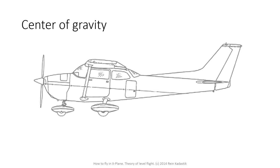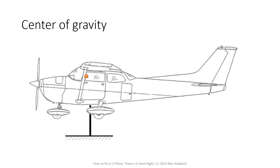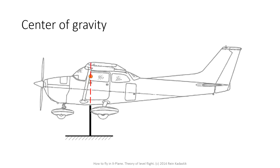Let's get started. The very first thing I'd like to talk about is the center of gravity. I will represent it as an orange dot on an aircraft. The center of gravity is an imaginary point of balance in an aircraft. The best way to describe it is to imagine a stick on the ground — you place the aircraft on top of that stick so that the center of gravity is exactly aligned to it, and the aircraft would remain perfectly balanced without falling over.